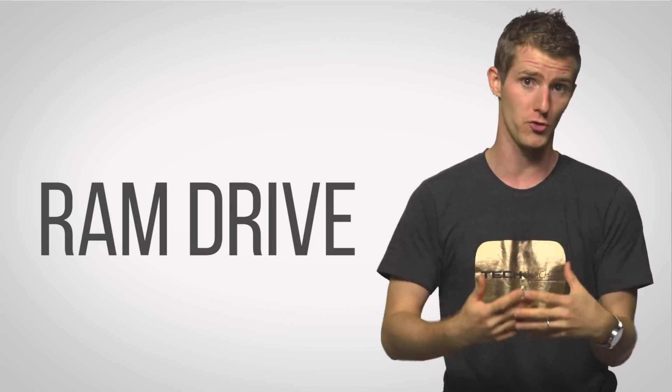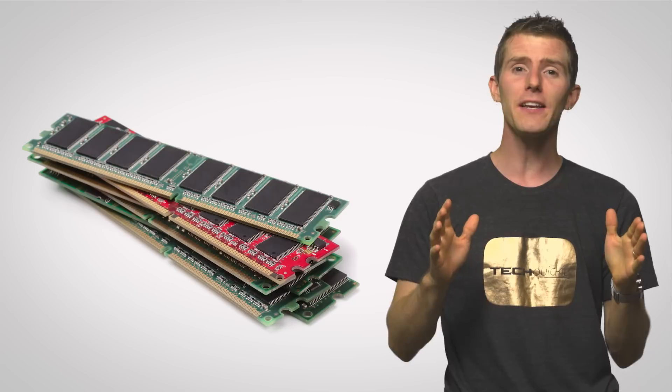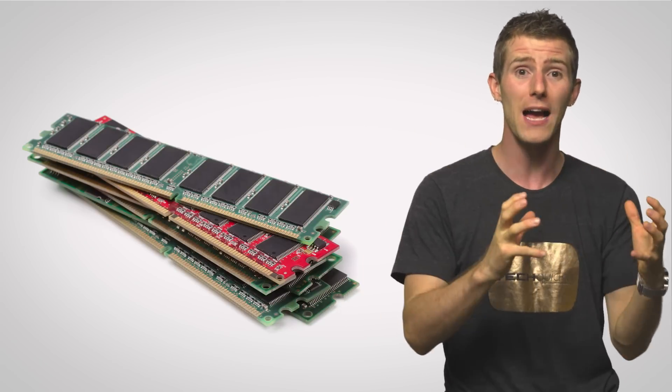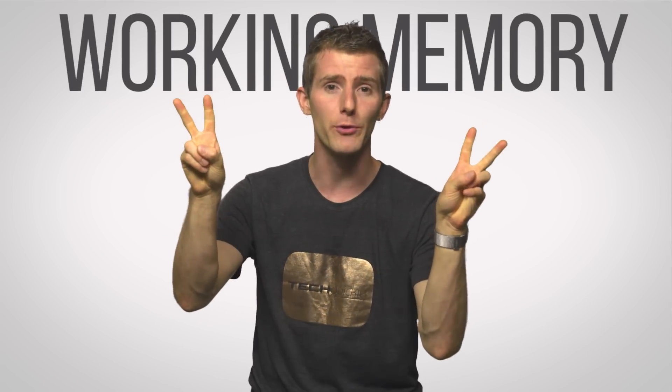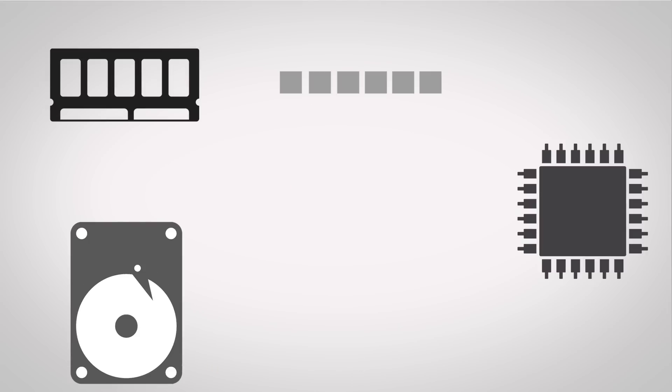Well, the absolute fastest storage solution you can have in a desktop rig anyway is a RAM drive, which is just what it sounds like — setting aside a certain amount of RAM to use as a really, really fast drive. So why is RAM good for this? You see, part of the reason we use RAM as the working memory for whatever the computer is doing at a given time, instead of using a hard drive or even a regular SSD, is because RAM is extremely fast.